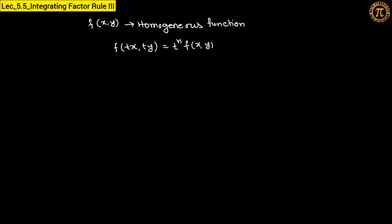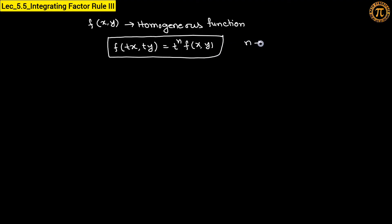That means you replace x by tx and y by ty, take t to the power n as common, and you get t to the power n times f of x comma y. Then the function f(x, y) is called a homogeneous function, and the number n is called the degree of the homogeneous function. You already learned this topic in your first semester.